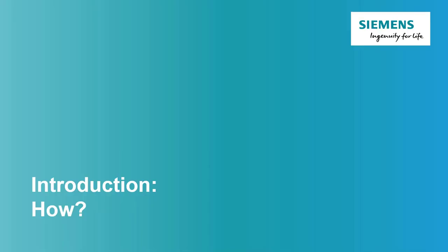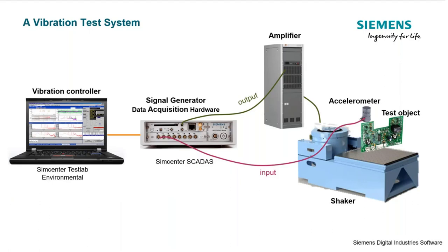So how do we do this vibration control testing? We'll talk about equipment and a brief introduction to the different test types. What we have here is a typical vibration control system, which consists of a couple of different elements. First, we have the vibration controller — in this case a PC with Centr Test Lab software — used to manage the test and determine the output needed to recreate the desired vibration levels.